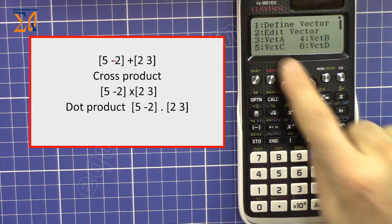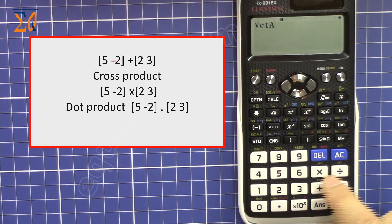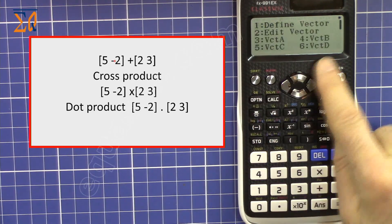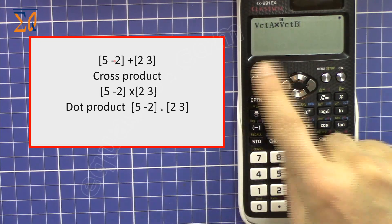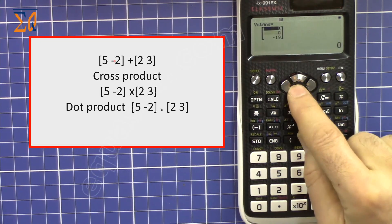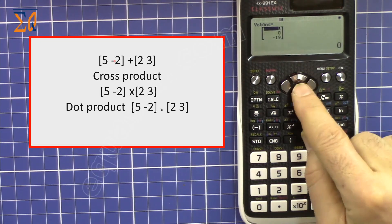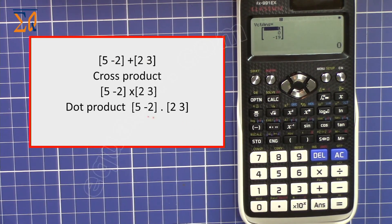If you need a cross product, which is a multiplication, the same way: recall the vector, then multiply by pressing Option and recall vector B, which is number 4, then press equal. The cross product result is a 3D vector.